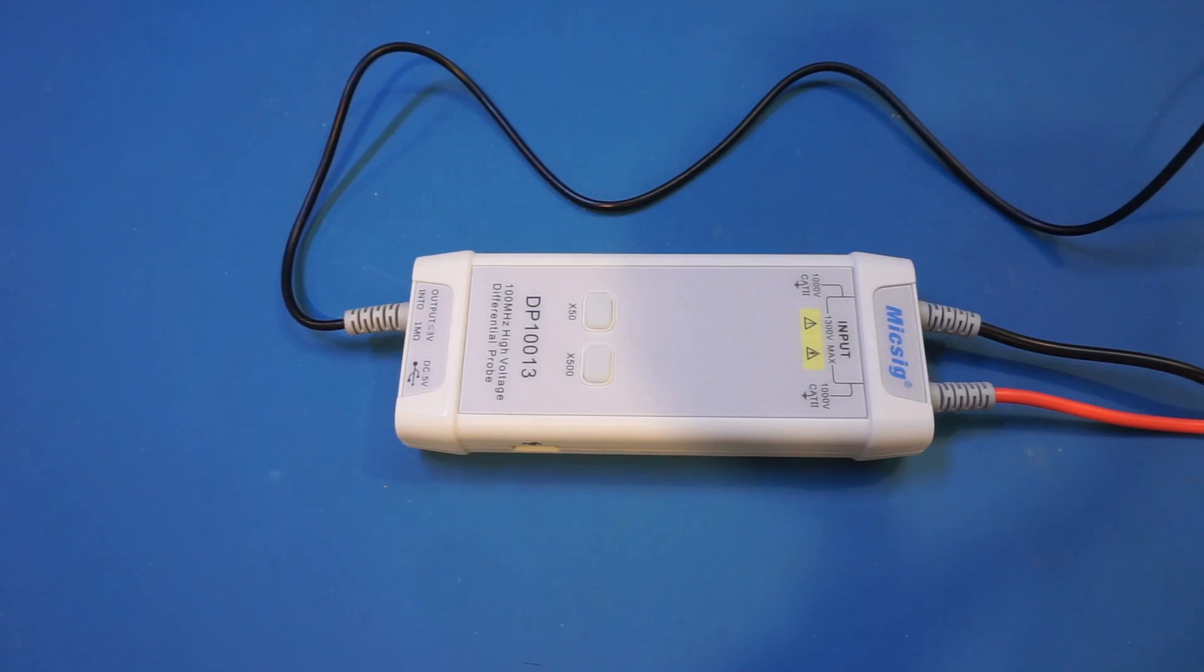One technique people use to measure mains reference circuit is to utilize two of the oscilloscope channels and use mathematical functions built in to subtract one channel's measurement from the other to obtain the final readings. This may be all you need if you just need to get a rough sense of the voltage waveform of a very low frequency mains earth-referenced signal. But the common mode rejection ratio is likely to be very poor, especially when the frequency increases.